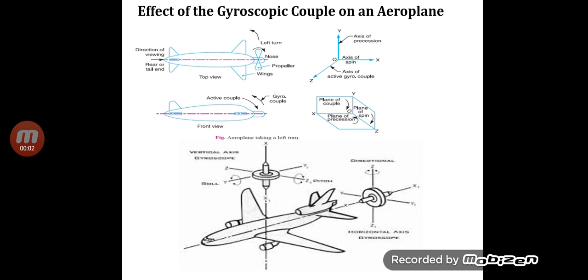As we have already seen, the gyroscope is an instrument in which a disc is rotating and the axis on which that disc is mounted is also going to spin about a vertical axis or about any axis. We have seen how the gyroscopic couple is generated. Now we are going to see which uses in our daily life are encountered by means of this gyroscopic couple. We are going to see first of all the gyroscopic effect on an aeroplane.